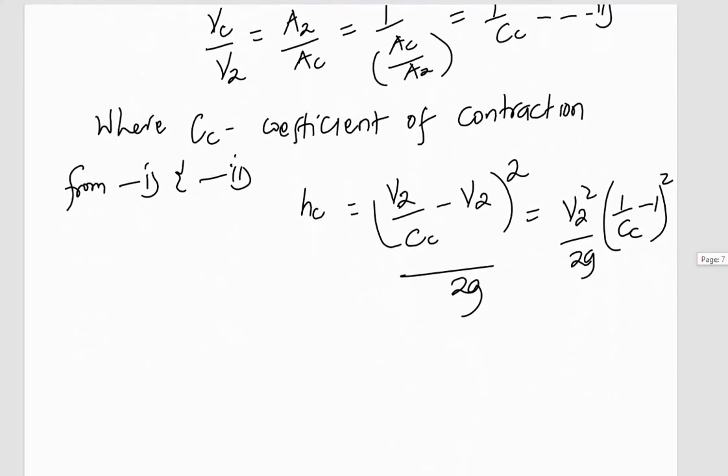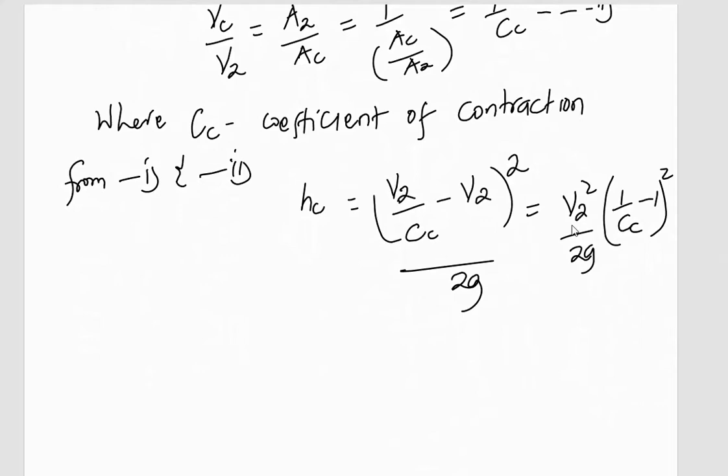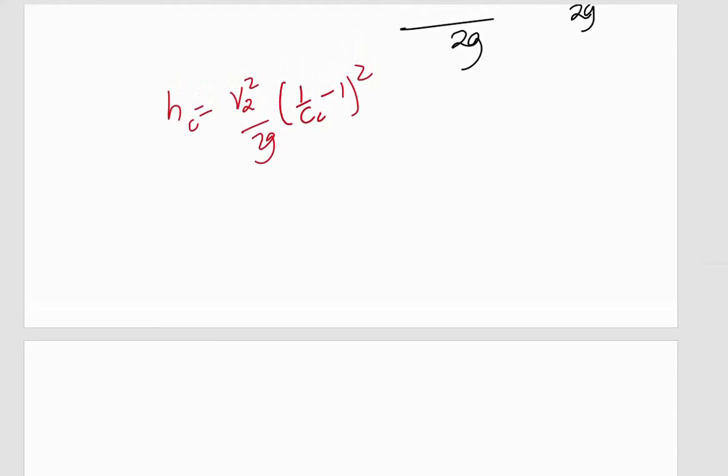If I factorize out V2 squared over 2g, I will have hc which will be V2 squared over 2g into one over Cc minus one, everything squared. Now if I take one over Cc minus one to equal to K, then it means hc will equal to V2 squared over 2g times K, which is equal to K V2 squared over 2g.